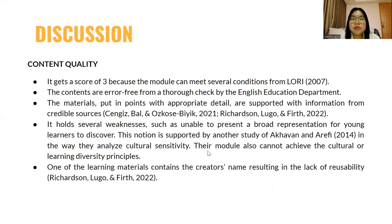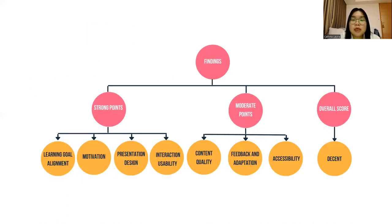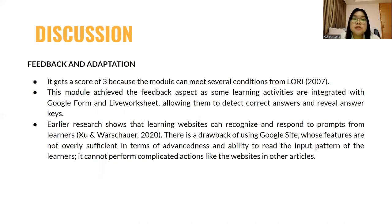For the moderate points, the first one is content quality. It gets a score of 3 because the module meets several LORI conditions — the contents are error-free, concise, and supported with information from credible sources. However, it is unable to present a broad representation of culture, and it fails the reusability aspect since the learning material contains the creator's name. Feedback and adaptation also gets a score of 3 because the module can detect correct answers and provide answer keys, but not all learning activities, materials, or assessments have these features.